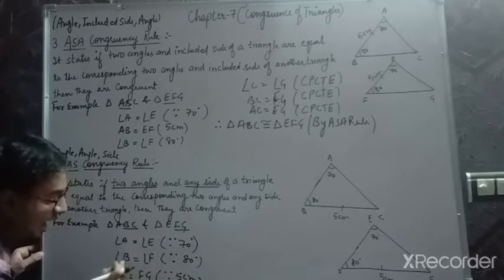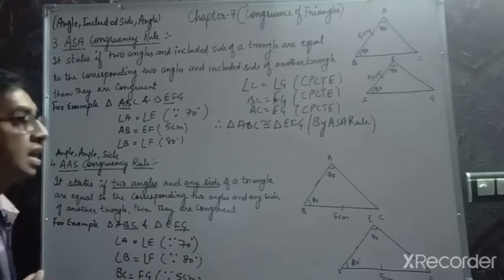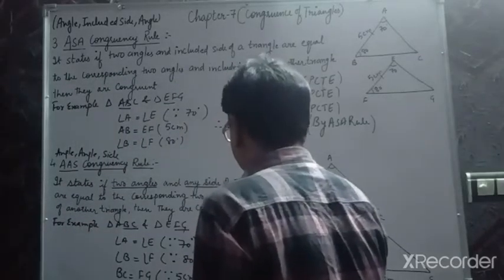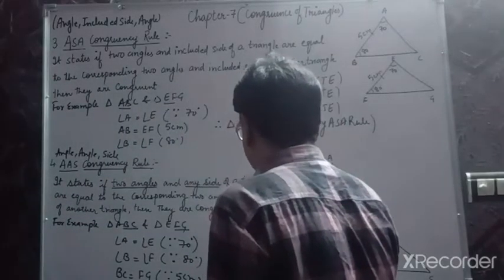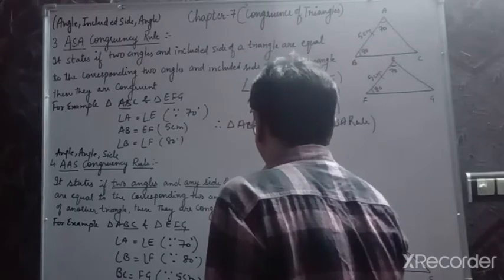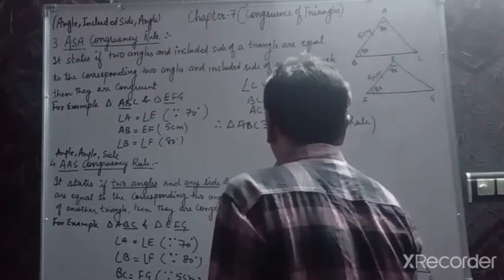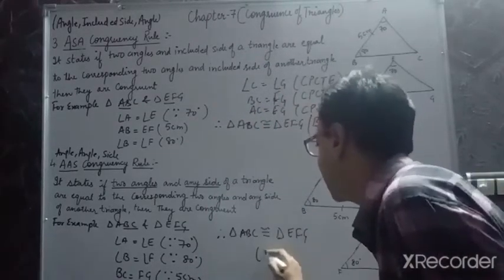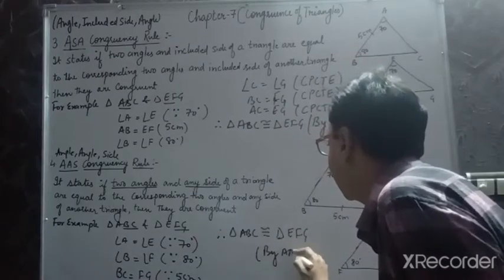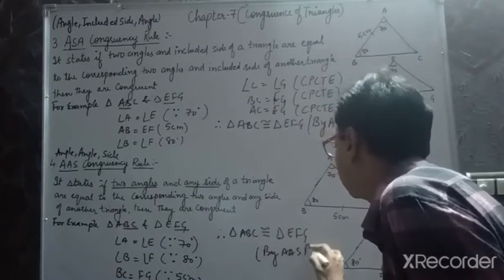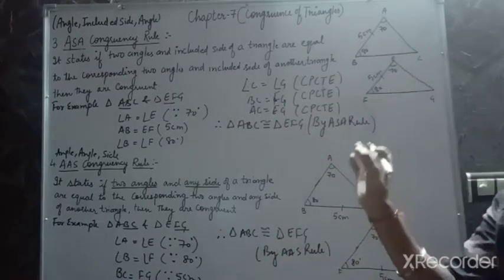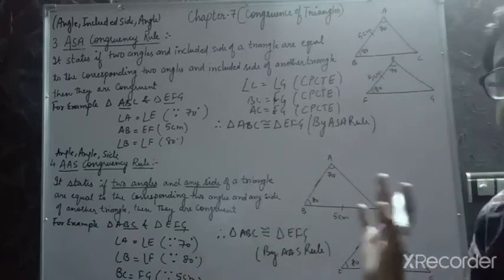Angle, angle, any side. Therefore, triangle ABC is congruent to triangle EFG by AAS rule, because we have considered any side, not the included side.